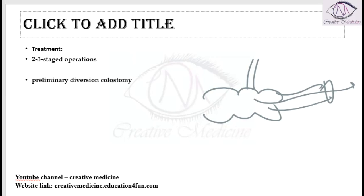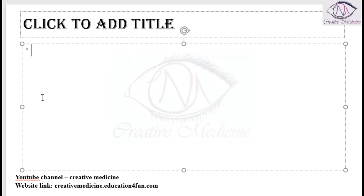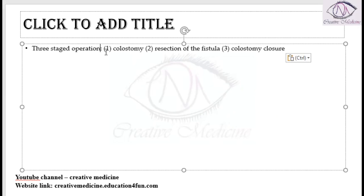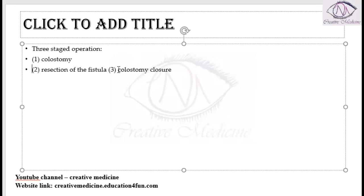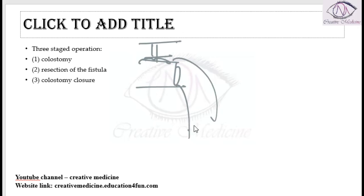In the three-staged operation: first a diversion colostomy is done, then the fistula is resected and the colostomy is closed, and finally the colostomy is re-anastomosed. This was the historical treatment of gastrojejunocolic fistula.